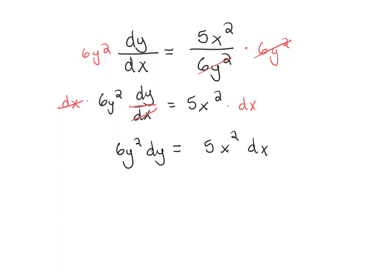Now we're going to take the integral of both sides. On the left, the antiderivative of 6y squared is 6y to the third over 3 plus a constant, equals 5x to the third over 3 plus a constant.